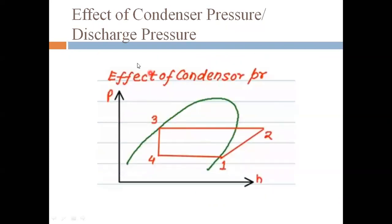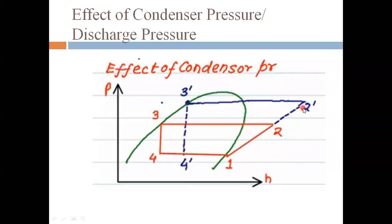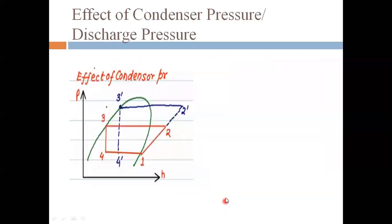Now, the effect of condenser pressure, also known as discharge pressure. The evaporator pressure line and condenser pressure line are identified. When we change the condenser pressure — using a higher refrigerant pressure — point two shifts to two-dash. The condensation is now two-dash to three-dash, followed by expansion, then evaporation producing the refrigerating effect. We need to analyze the change in refrigerating effect and W compressor.